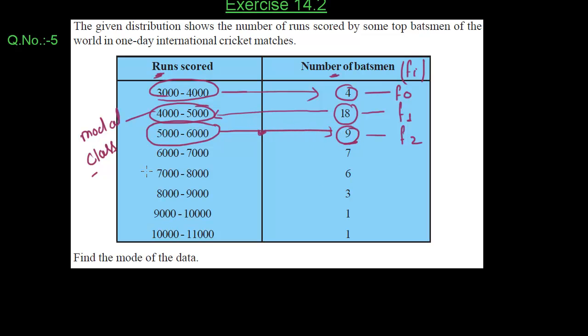So 9 is our F2. Now we have to find H. We know that H is equal to class size which is equal to upper limit of any class minus lower limit of that class. Our class size is 1000.